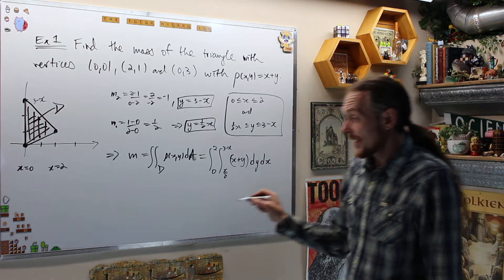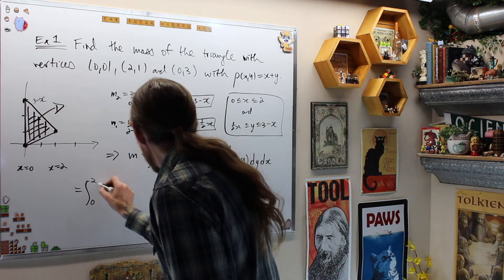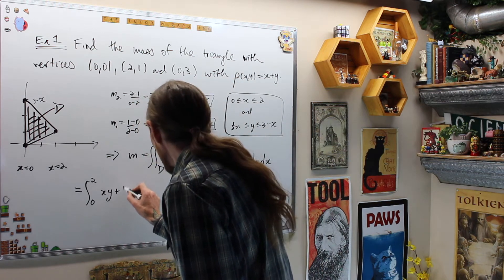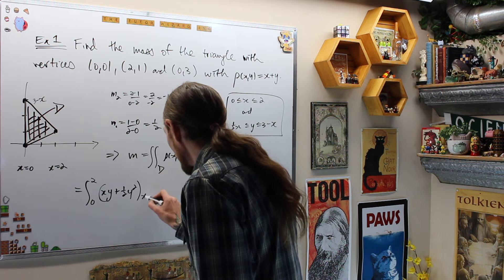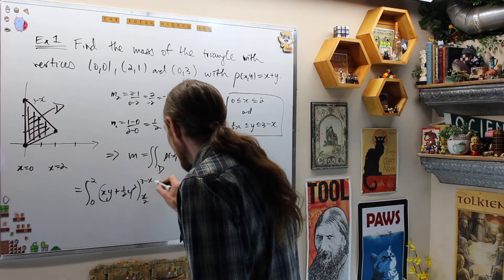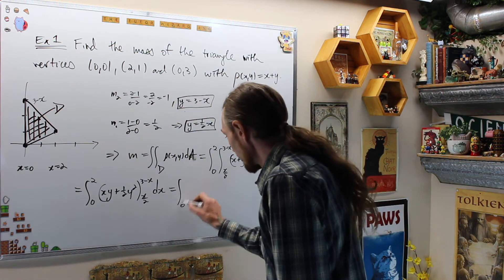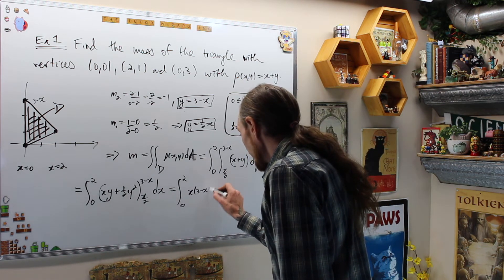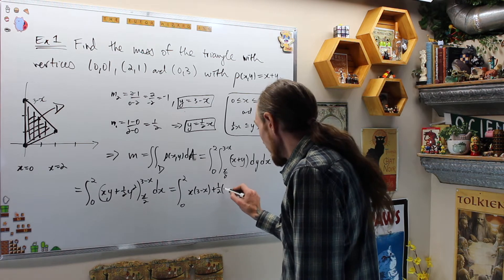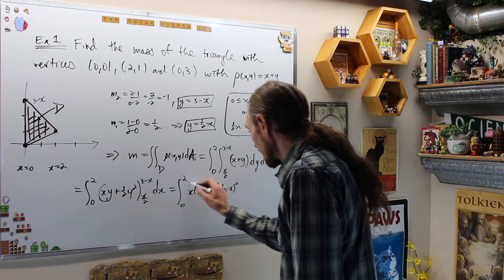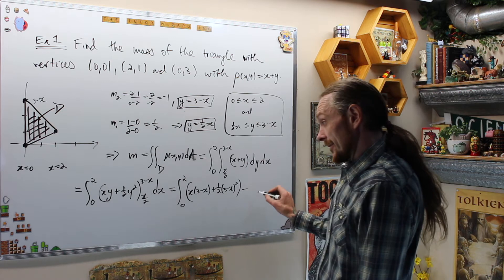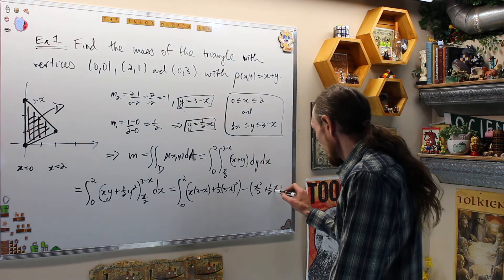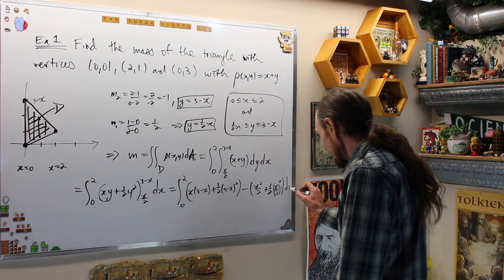I can now compute that. That is equal to the integral from 0 to 2 of [xy + (1/2)y²] evaluated from x/2 to 3−x, dx. This is equal to the integral from 0 to 2 of [x(3−x) + (1/2)(3−x)² − (x·(x/2) + (1/2)(x/2)²)] dx.